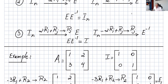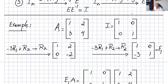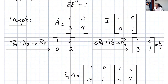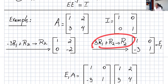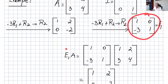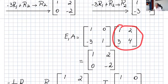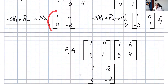Now let's go through an example. Take the 2×2 matrix A = [[1,2],[3,4]] and the identity matrix. To eliminate the 3, apply -3R1 + R2, changing R2 to get [[1,2],[0,-2]]. Applying the same operation to I gives the elementary matrix E1 = [[1,0],[-3,1]]. Multiplying E1 times A gives [[1,2],[0,-2]], the same result as applying the row operation directly.